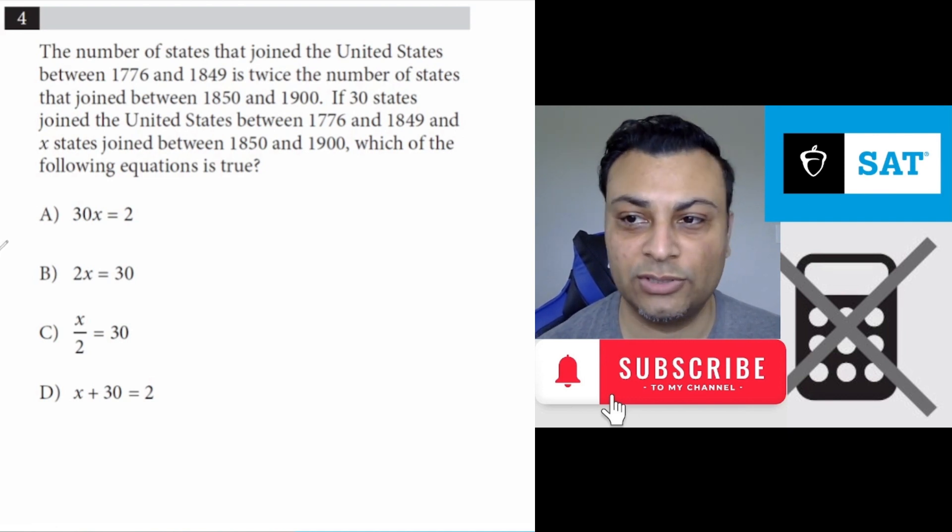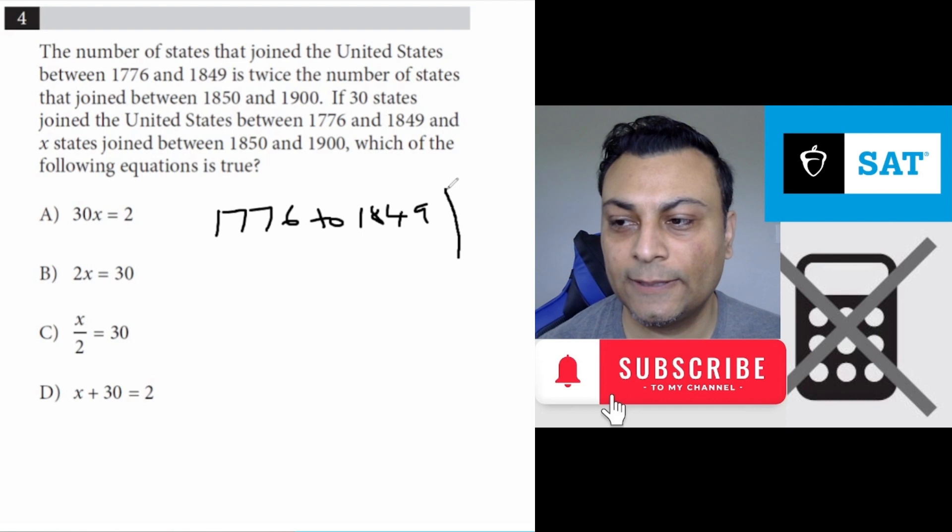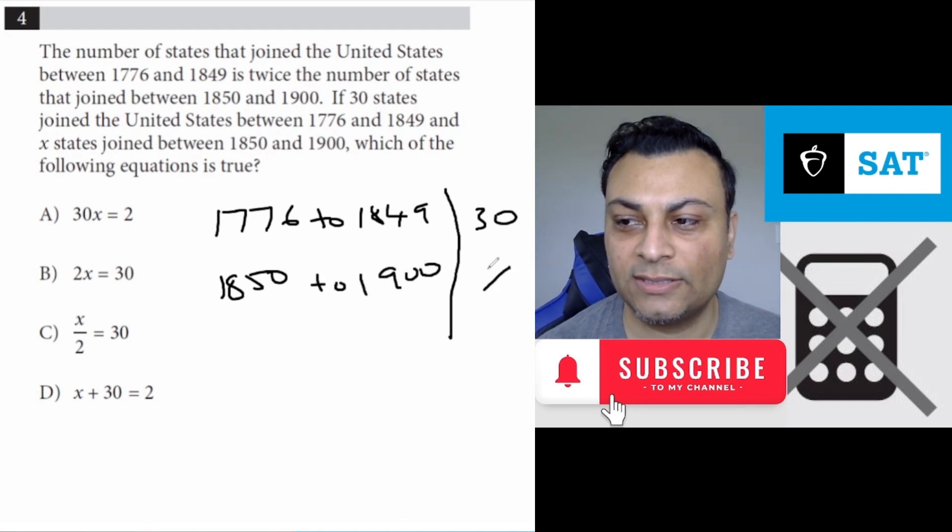So there are only two phases here. 1776 to 1849, and that involved 30 states. And then the other one was 1850 to 1900, and that involved X states.